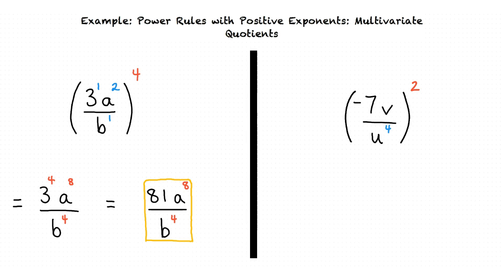Once again, we begin by applying the power rule to rewrite our expression. After multiplying each exponent inside the parentheses by 2, the result is -7² times v² over u to the eighth power.